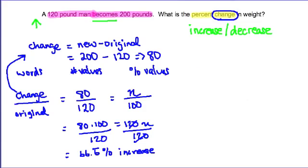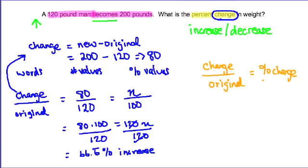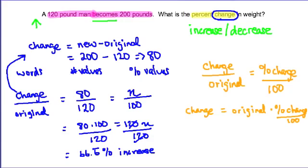The second way to do this is to use an equation, and we can build our equation from the proportion. What we really had is the amount of percent change over the original equals the percent change divided by 100. Using cross products, we can make a formula: the amount of change equals the original amount times the percent change over 100 — which is really just converting the percent to a decimal.